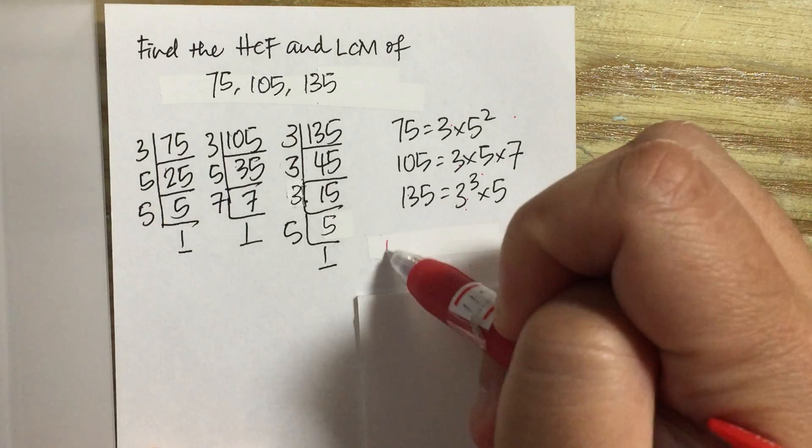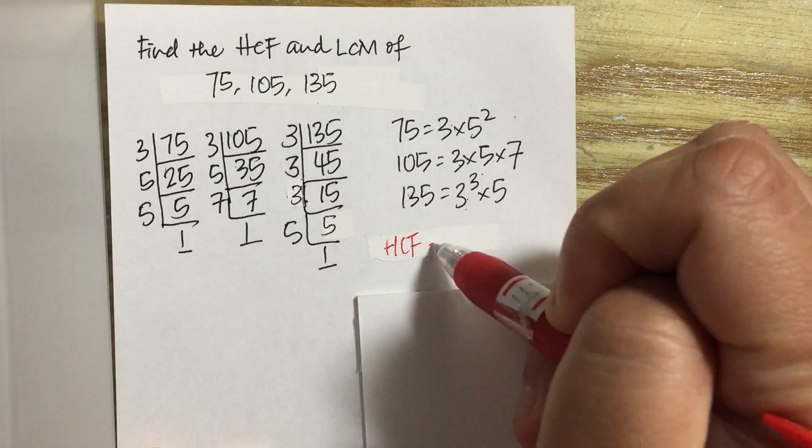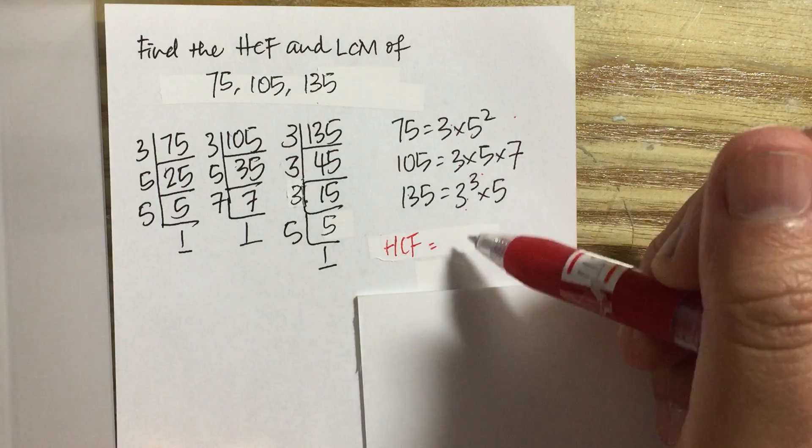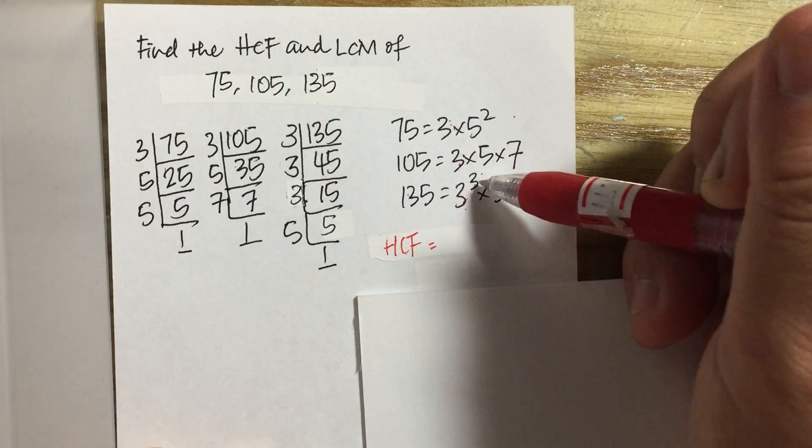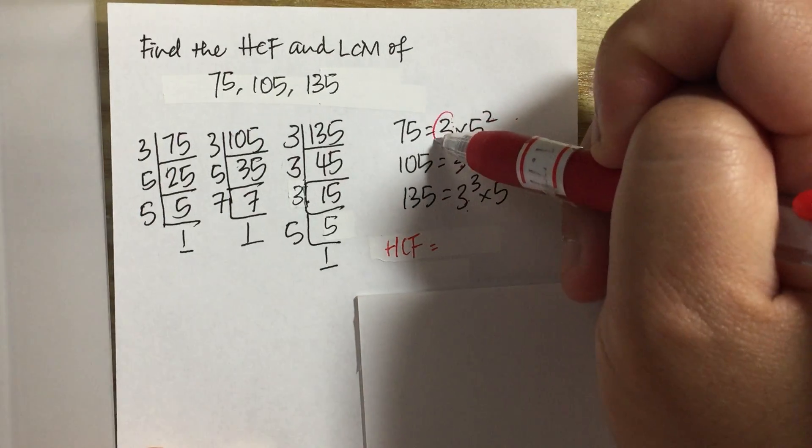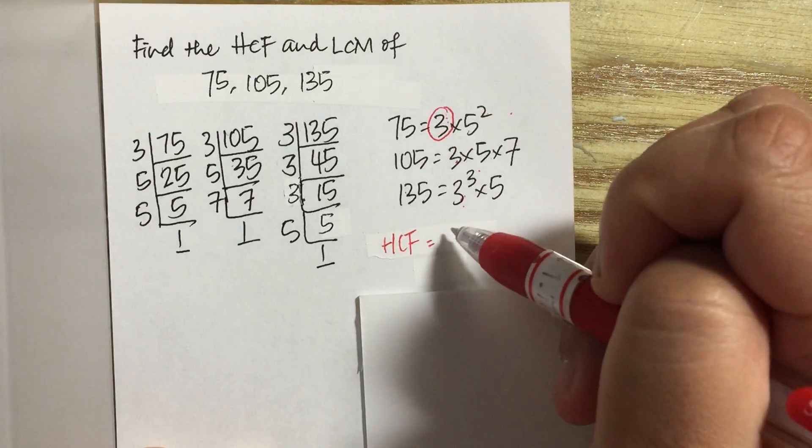Here, to find the highest common factor, since we want something that is common across all three numbers, we have 3, 3, and 3 cubed. So the highest common factor would be with a single 3.